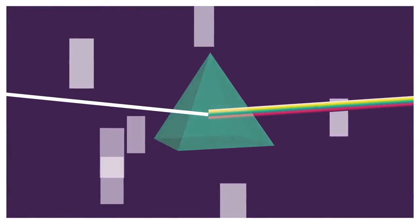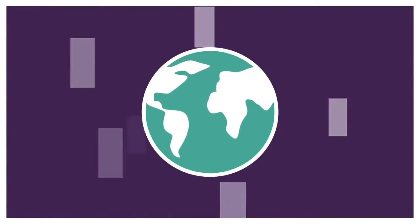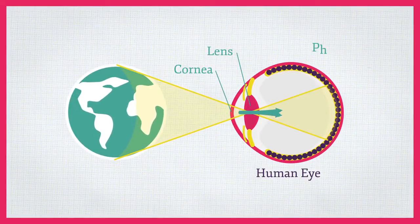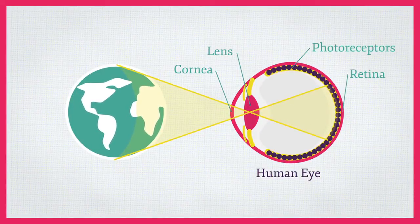Our eyes are the gateway to our most vivid impressions of the world around us. Light passes through the cornea and lens and is detected by light-sensitive cells called photoreceptors in the retina.